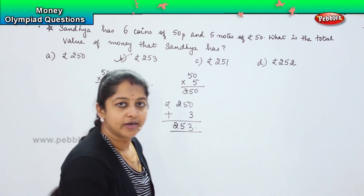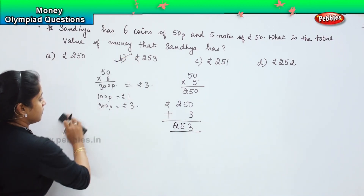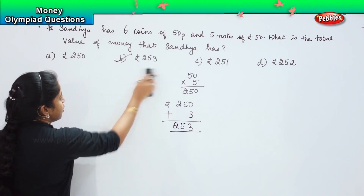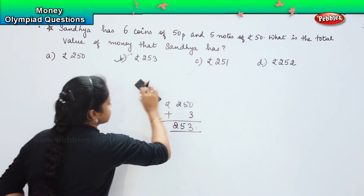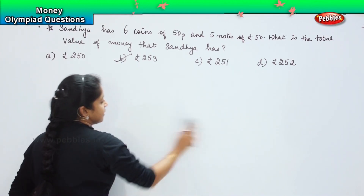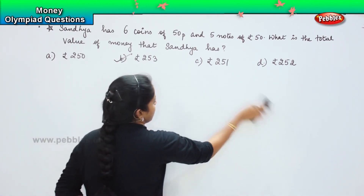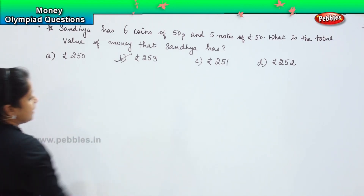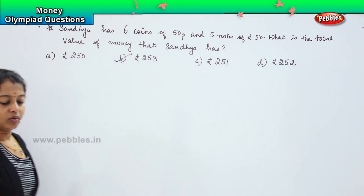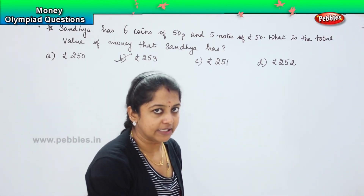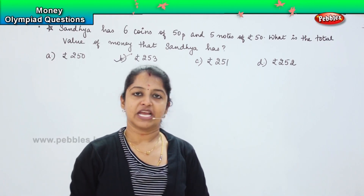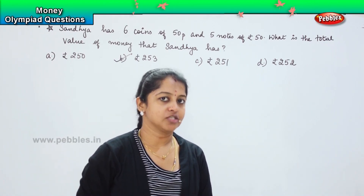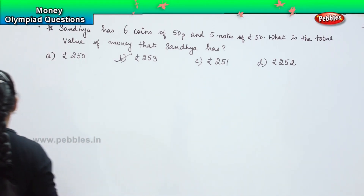Did you understand this one? First we solve the value of paise in rupees, and then we solve the note value. When added together, it gave us the total price. Shall we proceed further? Here is your next question.